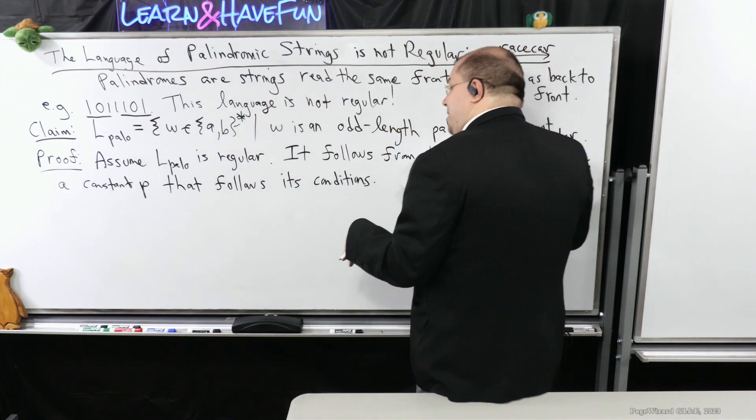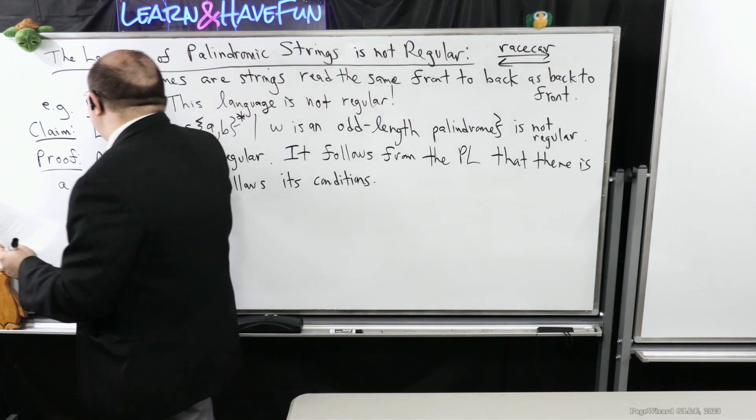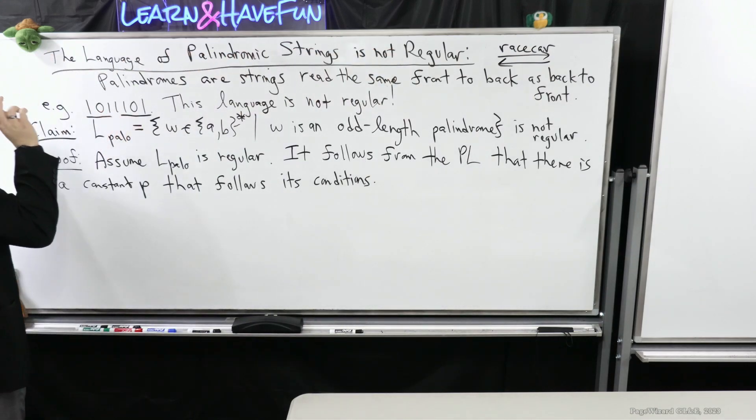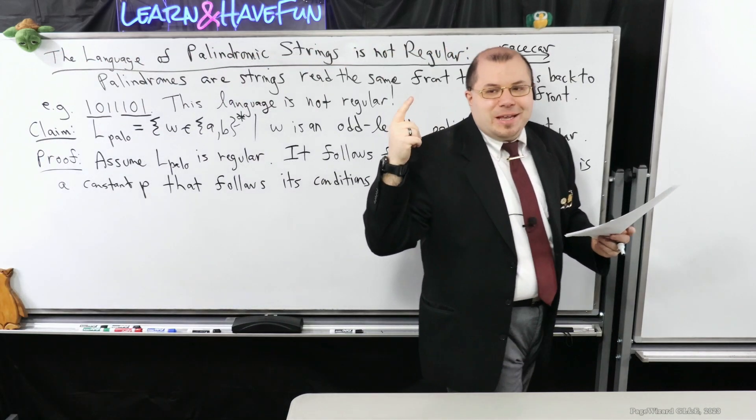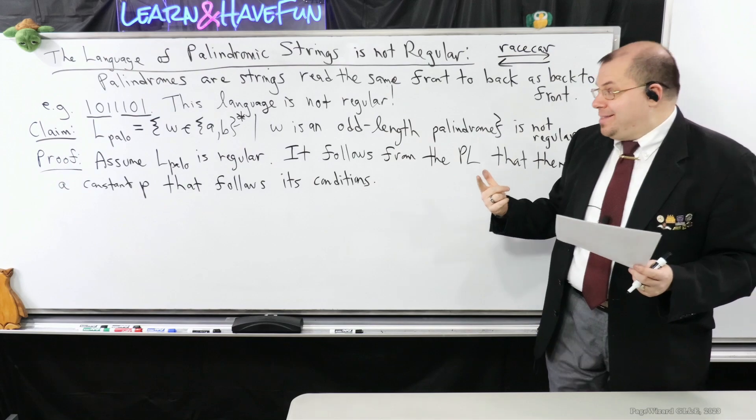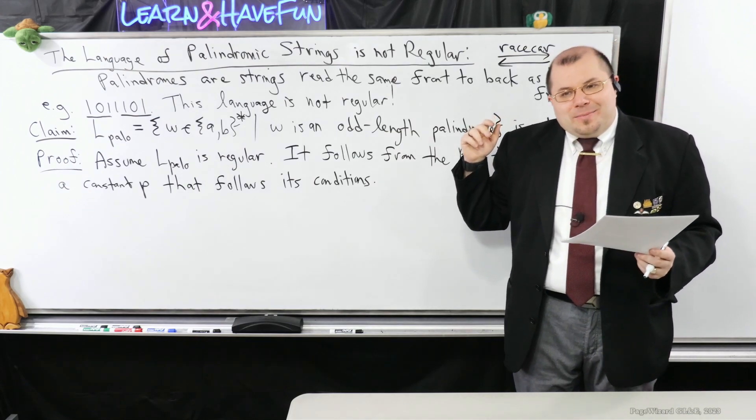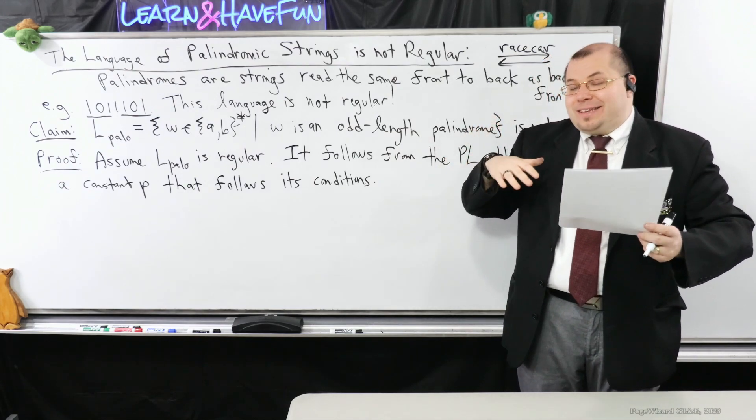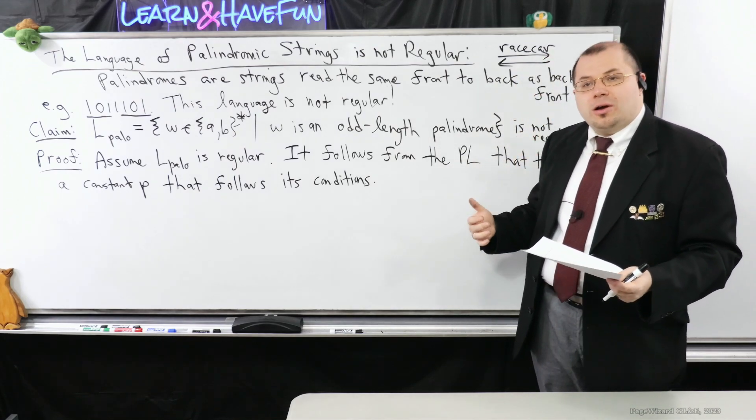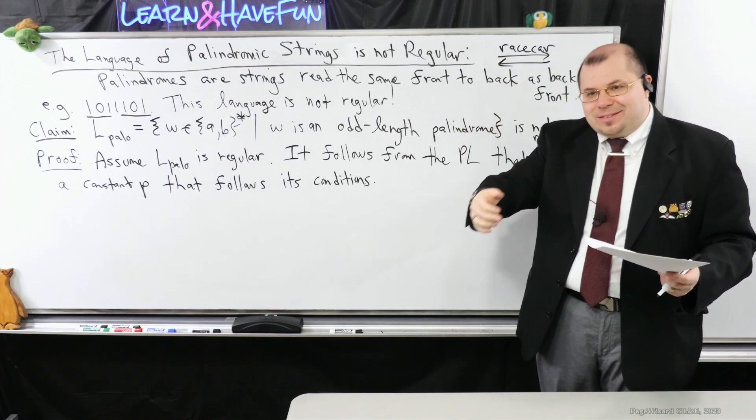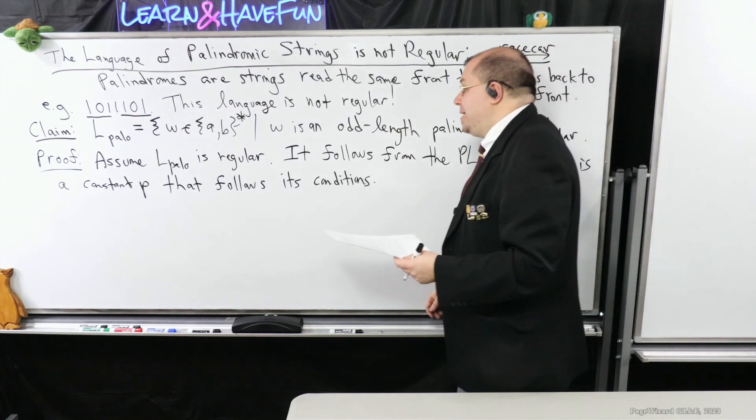So now we got to pick the string. Now we're going to be very careful because remember, we need to make sure the string's in the language. Has to be in the language. It has to be at least the pumping length in its length. But I want to pick it such that it makes it easy for me to determine the form of the string, regardless of how the pumping lemma dissects the string into three substrings, X, Y, and Z.